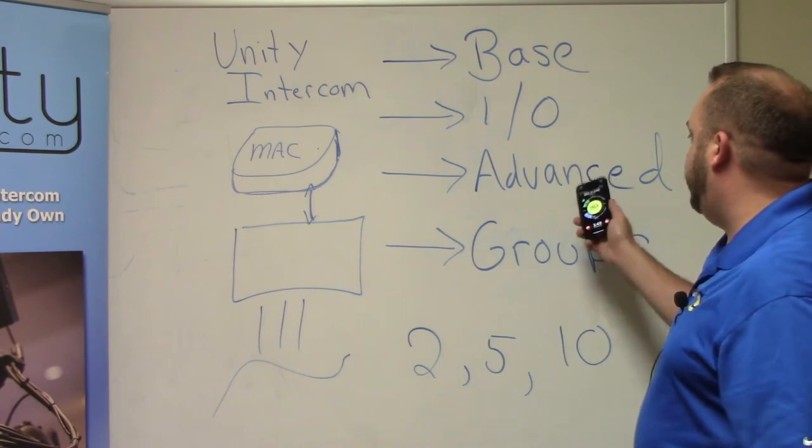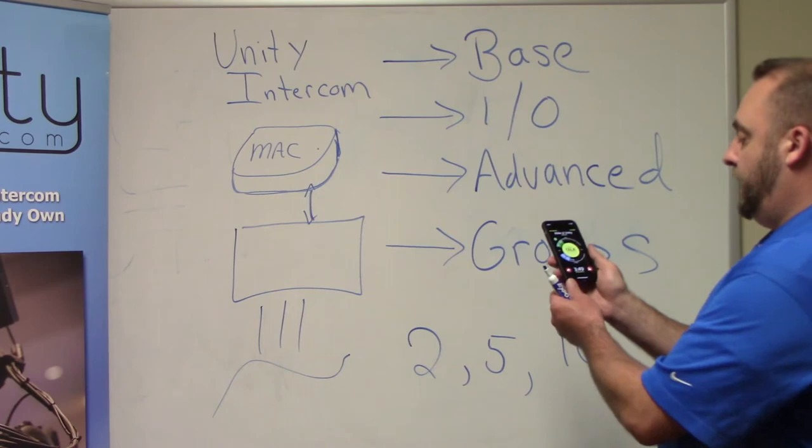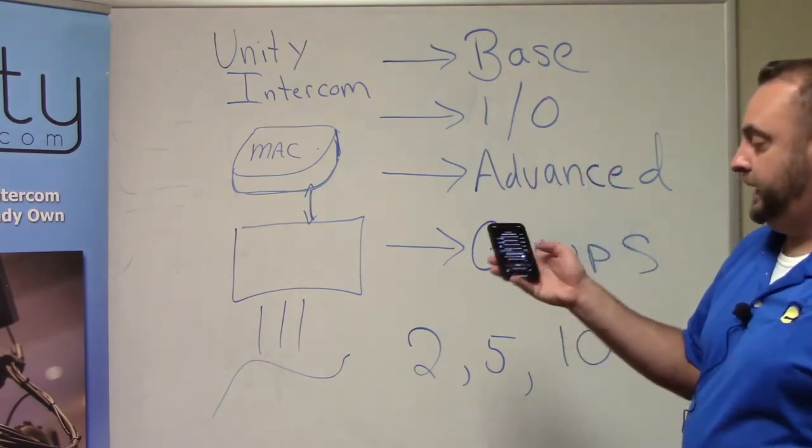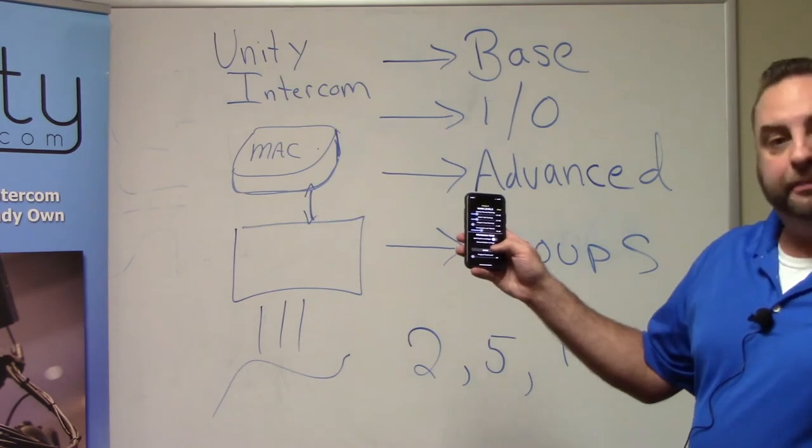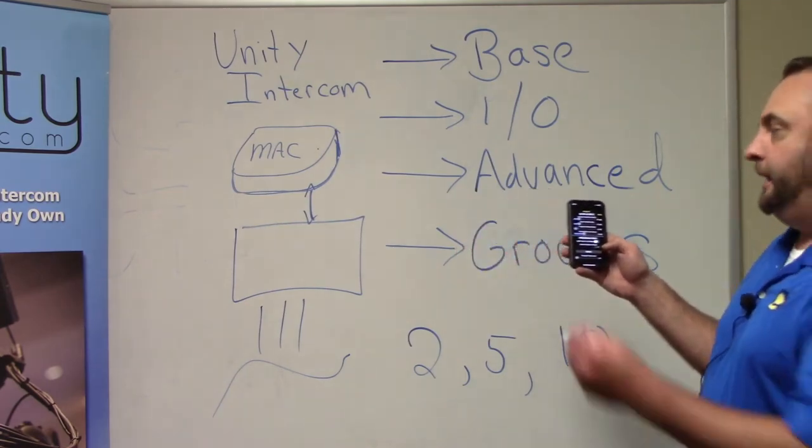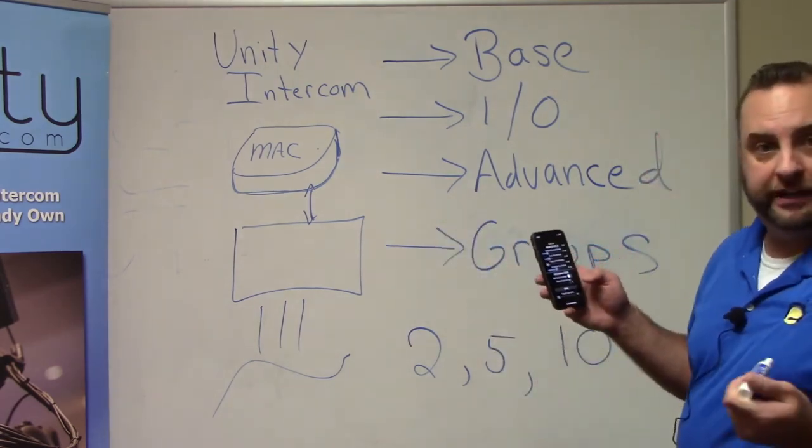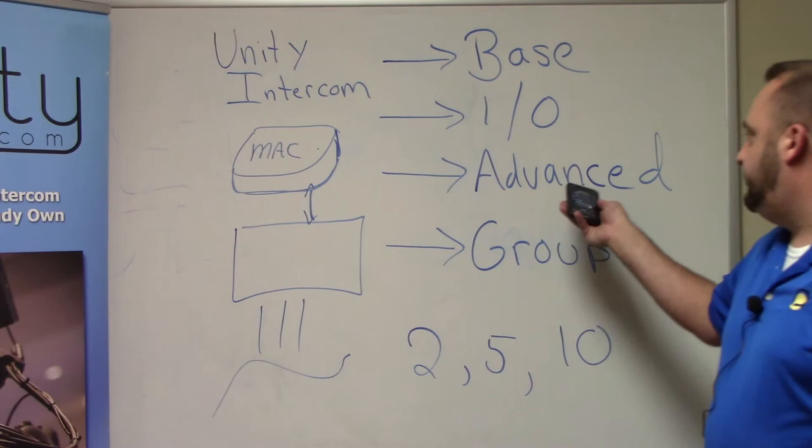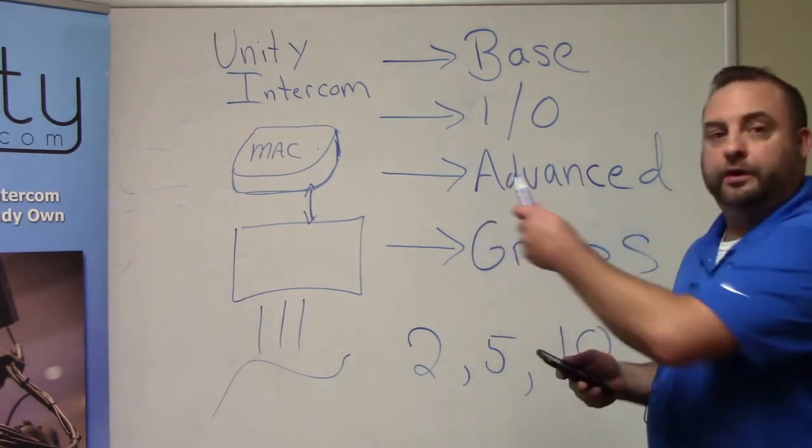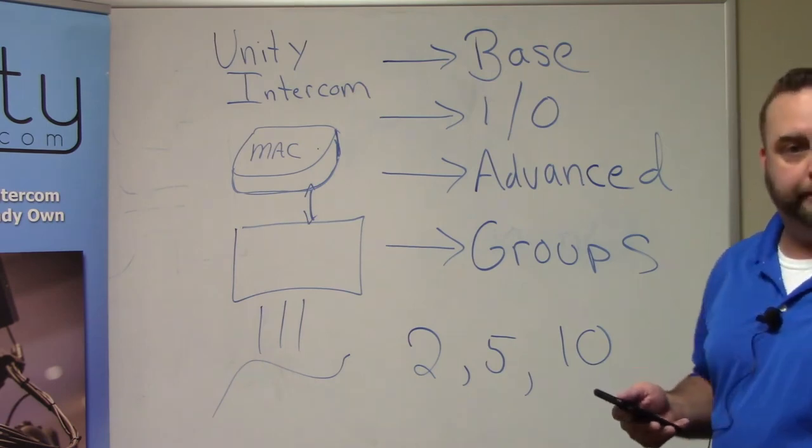That's the base license gets you one program audio feed or program slash IFB feed. With the advanced license, you can have up to 64 selectable program audio feeds. So when I'd swipe up or click on the volumes page down here in my little IFB program feed section, I would have up to 64 selectable and you get to choose which users have access to which feeds.